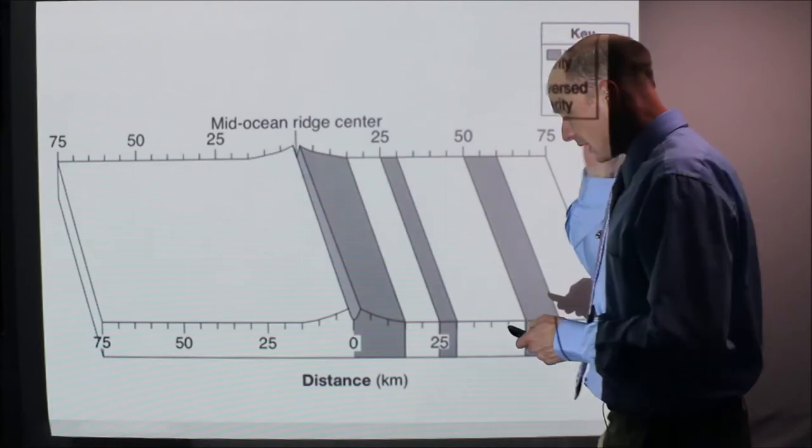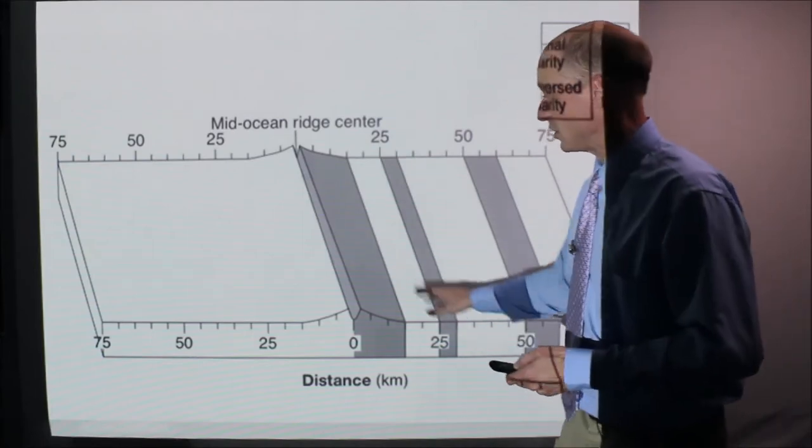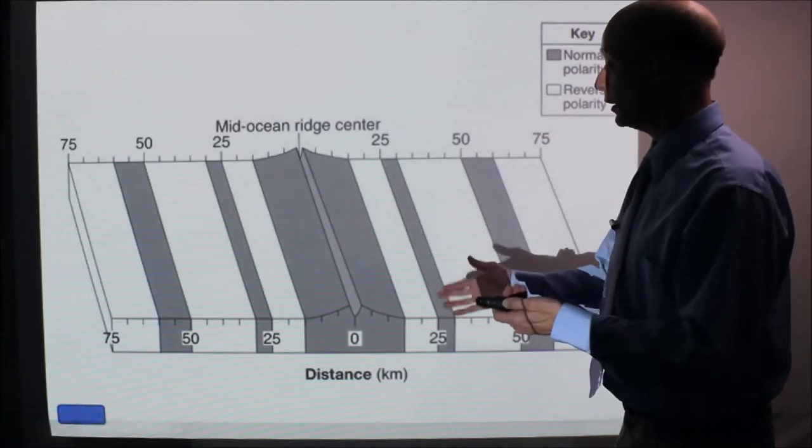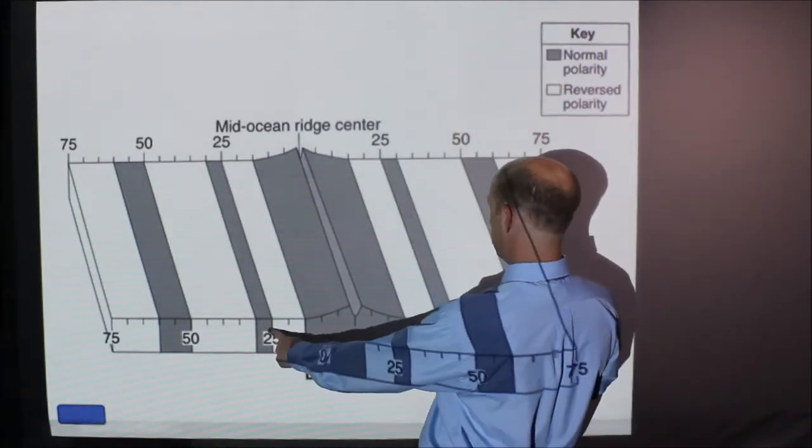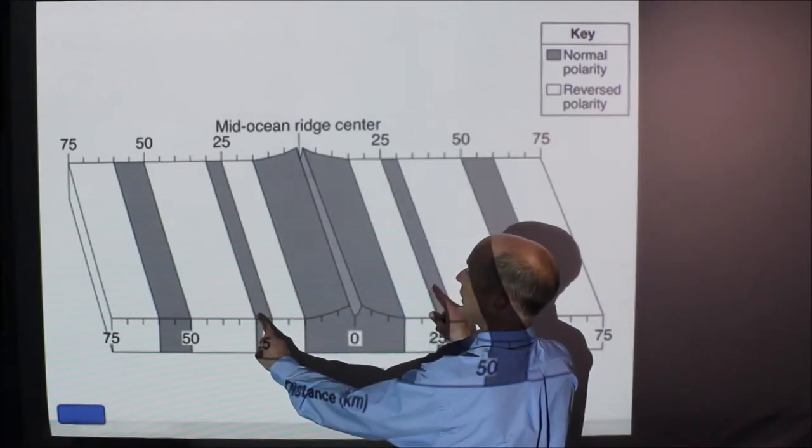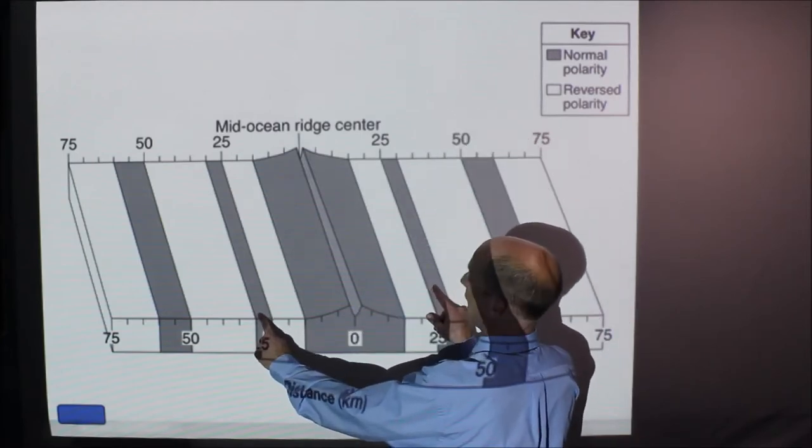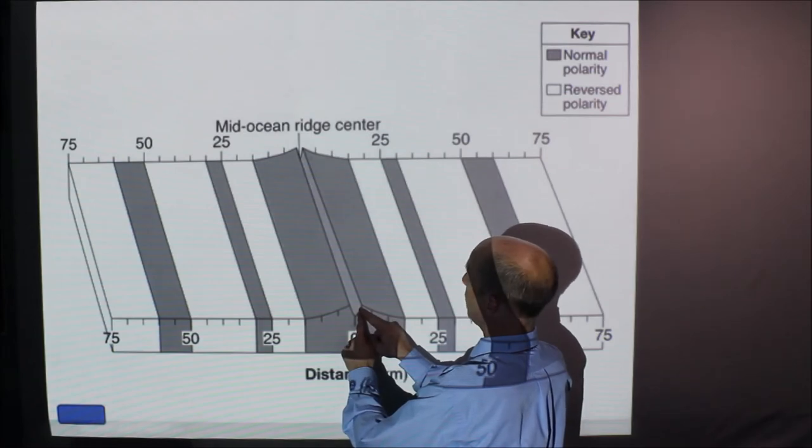This is another one. I think this was a Regents question where they gave you this. You actually draw the other one in, but it looked like that. So like this, so this here, these represent this thin area of normal polarity. They were both back here when they formed.